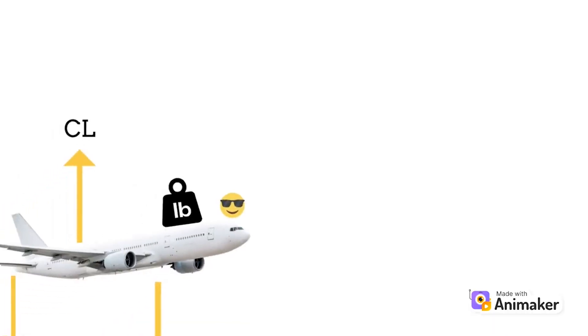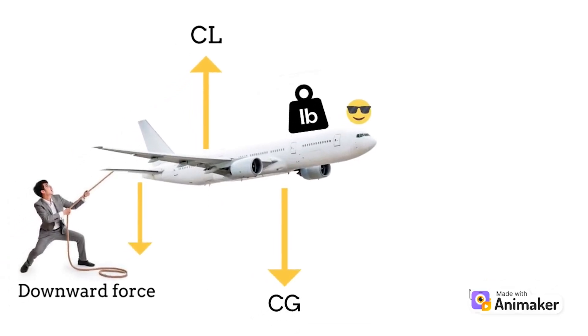That's why we have the third force: the downward force generated by your horizontal stabilizer. The center of lift counteracts the center of gravity, but because the CG is slightly forward of the center of lift, the airplane still has a tendency to pitch down. The horizontal stabilizer acts like a flipped wing — it generates lift not upward but downward, which we call the downward force. When the horizontal stabilizer generates the downward force, it drags the tail down, causing the nose to go up, increasing angle of attack and counteracting the nose-down tendency.